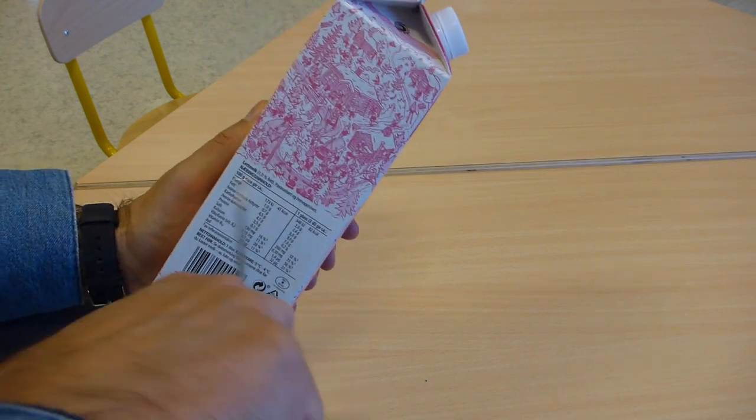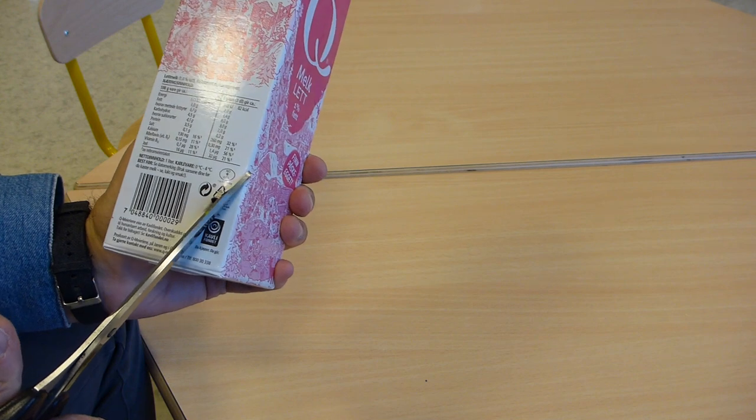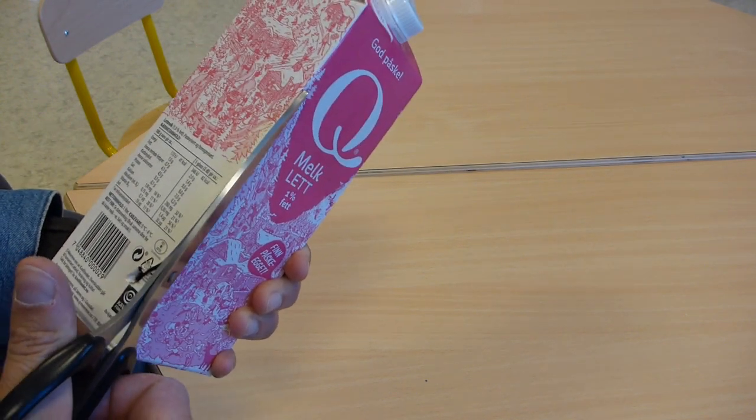Firstly, you prick a hole in one side of the carton and cut away the whole side.